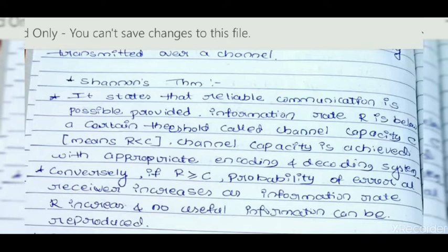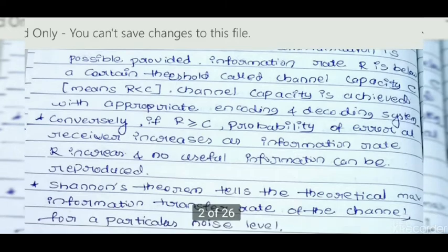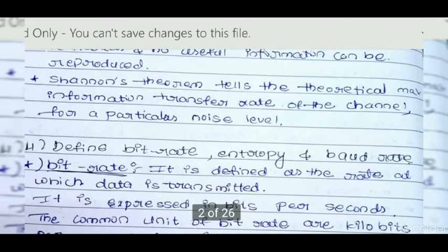Channel capacity is achieved with appropriate encoding and decoding systems. Conversely, if R is greater than or equal to C, the probability of error at the receiver increases as information rate R increases and no useful information can be reproduced. Shannon's theorem tells the theoretical maximum information transfer rate of the channel for a particular noise level.